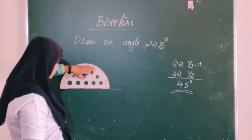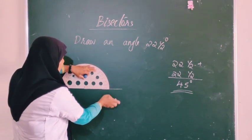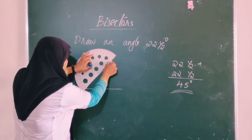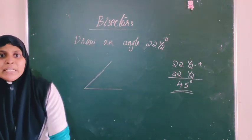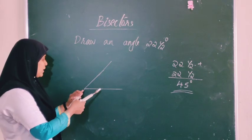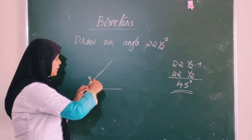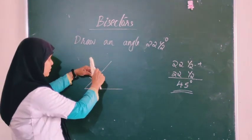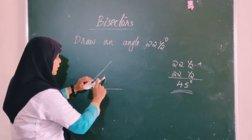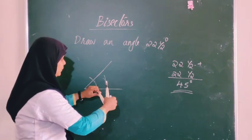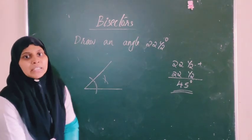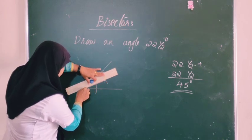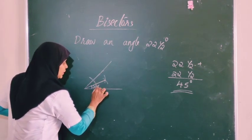We place the compass at this corner and mark arcs for the 45 degree angle. Then we bisect that 45 degree angle using the angle bisector method. At the end we get 22.5 degrees — that is, 22 and a half degrees.